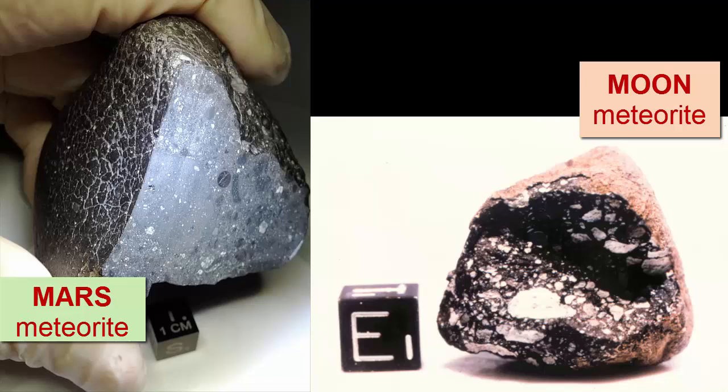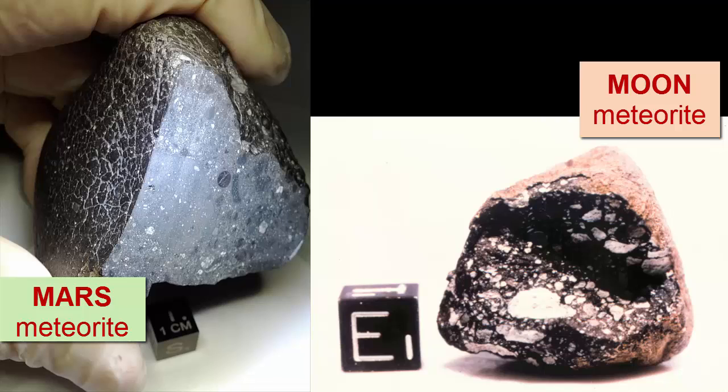Some younger meteorites are pieces of the crust of the Moon or Mars. We can distinguish those meteorites from the ones that are remnants of the formation of our solar system by their composition and younger age. Gathering up and studying meteorites also teaches us about the material that makes up the Earth.